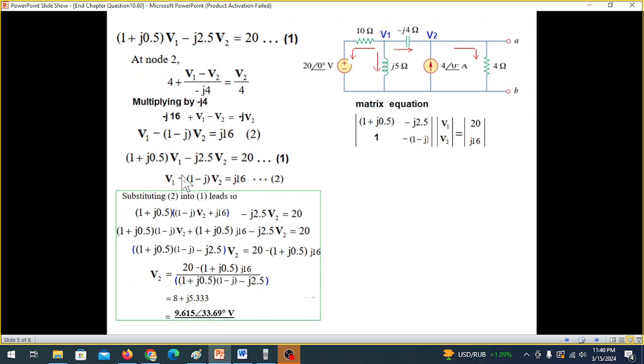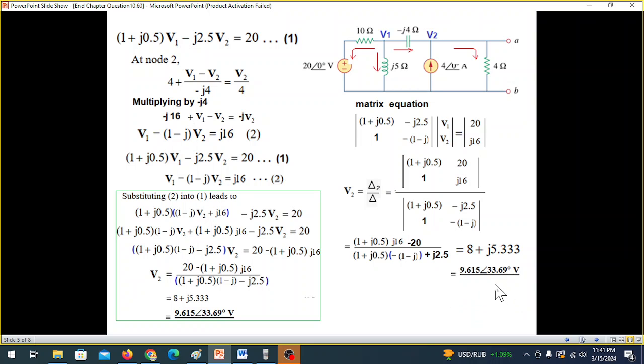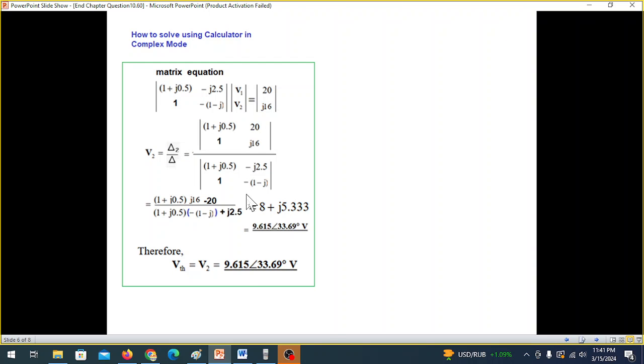This is matrix method from these two equations. We have written the matrix equation. And since we need to find only V2 here, this one. V2 is the V_Thevenin. V2 is delta 2 over delta. And delta 2 we find by replacing the determinant's second column by the output. And this whole thing is delta. And this can be written now cross-multiplying numerator and similarly cross-multiplying denominator. And by solving, we get this answer. In the next slide, I'll show you how you can easily solve by using your calculator. And this is V2. And that is our answer V_Thevenin.